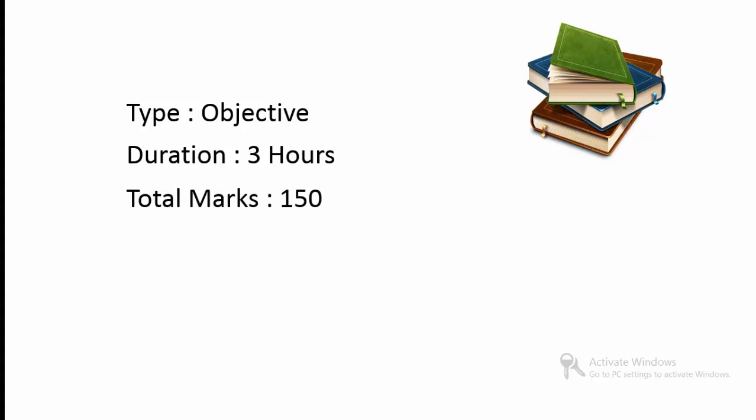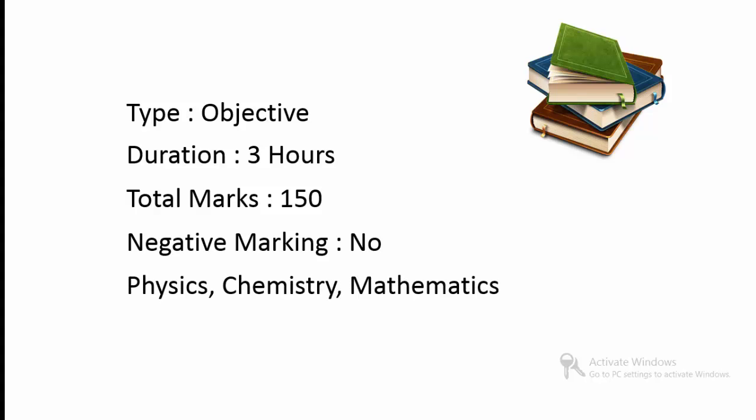The total marks are 150, with 3 sections: Physics, Chemistry, and Mathematics — 50 marks each. Regarding the marking scheme, there is no negative marking. You will be awarded one mark for each correct answer. The paper consists of 150 questions covering 12th class syllabus in Physics, Chemistry, and Mathematics.